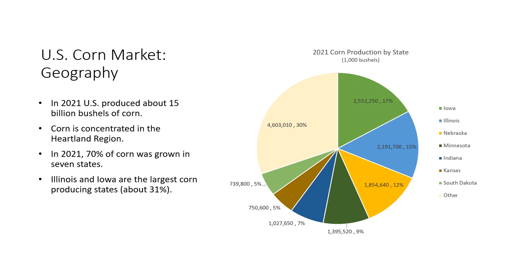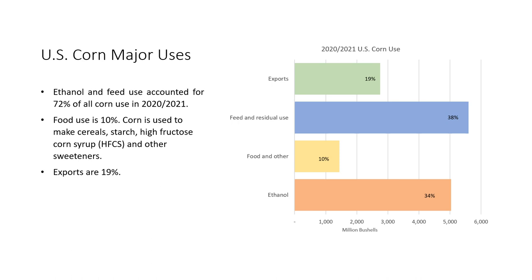In 2021, the U.S. produced about 15 billion bushels of corn, or 384,000 metric tons. One bushel of corn is 56 pounds. Corn is grown in most U.S. states but is concentrated in the heartland region. In 2021, 70 percent of corn was grown in Illinois, Iowa, Indiana, Kansas, Minnesota, Nebraska, and South Dakota. Illinois and Iowa are the largest corn-producing states, comprising about 31 percent.